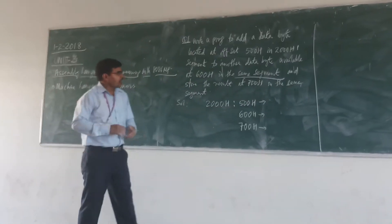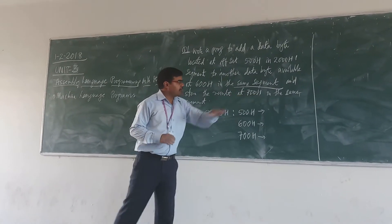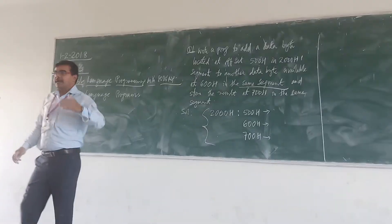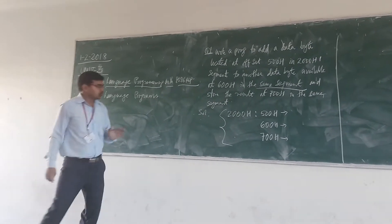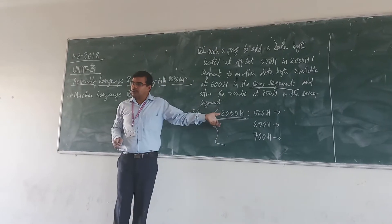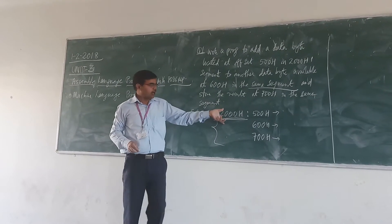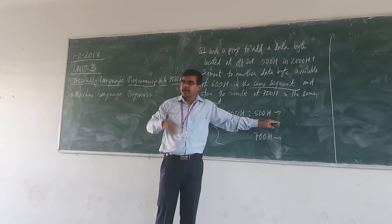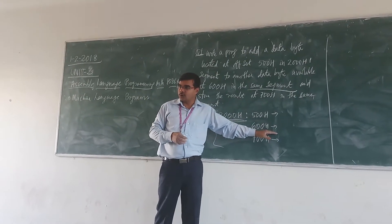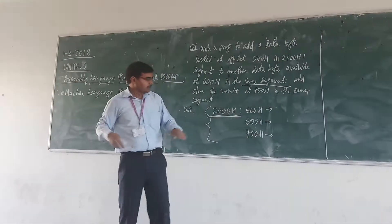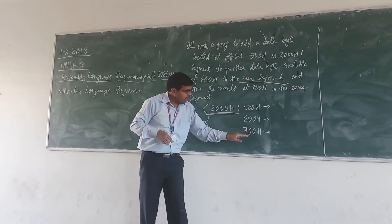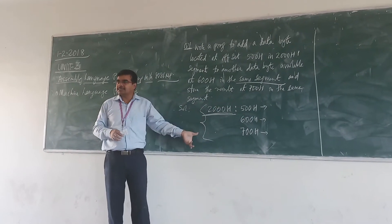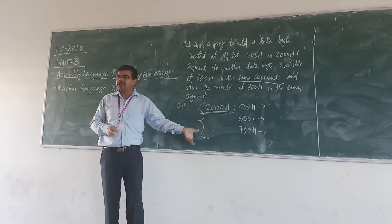Store the result at 700H in the same segment. The entire program uses the same segment, which is the 2000H segment. You have one data byte at offset 500H, another at 600H, and you add those two and store the result at 700H — all within the same segment.